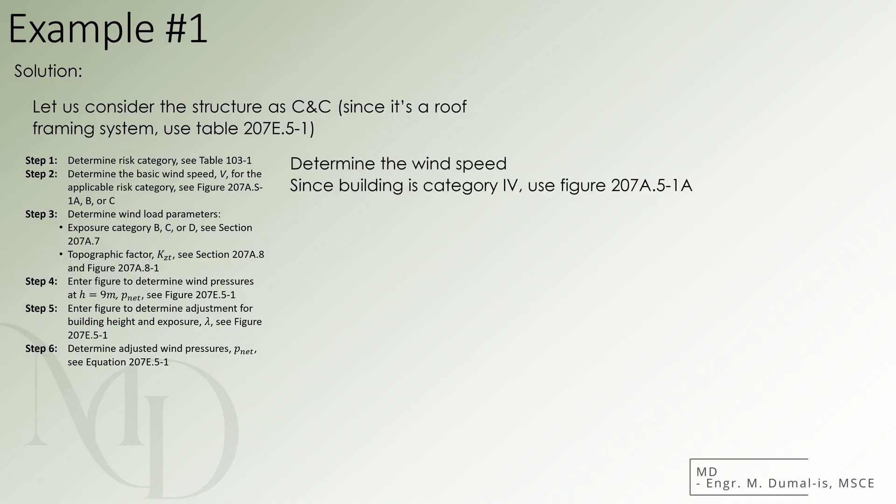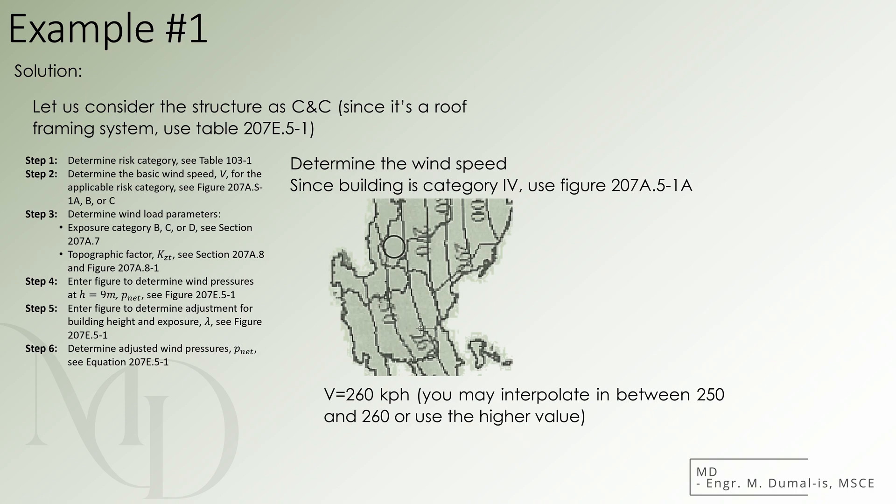With those informations, we are now certain that the most fitting map to determine the basic wind speed of the site is using figure 207A.5-1A. And so, if we look at the map, Baguio is sitting in between 250 and 260 kilometers per hour of wind. We can either choose to visually interpolate the exact value, but since the exact site location was not specified, it would be best to choose the higher value, which is 260 kilometers per hour.